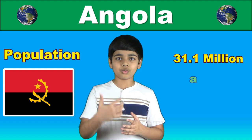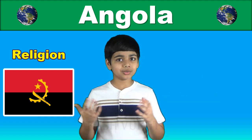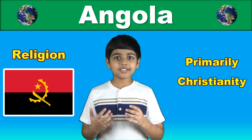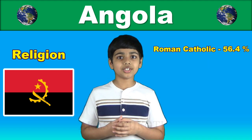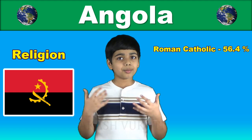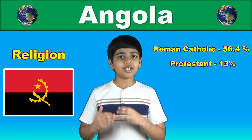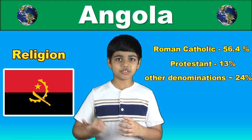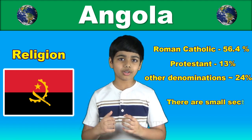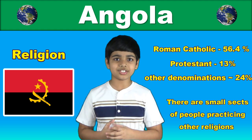The population is 31.1 million as per the 2020 estimate. Religion is mostly Christianity: Roman Catholic at 56.4%, Protestant at around 13%, and other Christian denominations make up 24%. There are also small sects of people practicing other religions in Angola.